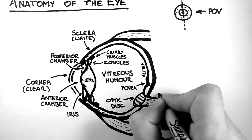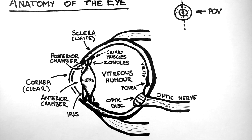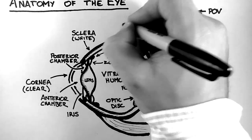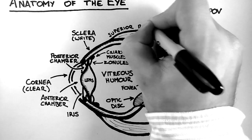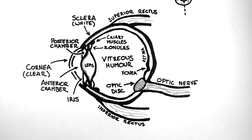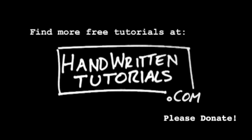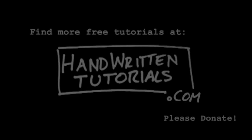At the back, this is the optic nerve, extending back toward the brain. On this view we can also see two of the six muscles responsible for eye movements — the superior rectus muscle and the inferior rectus muscle. That's an overview of the general anatomy of the eye.